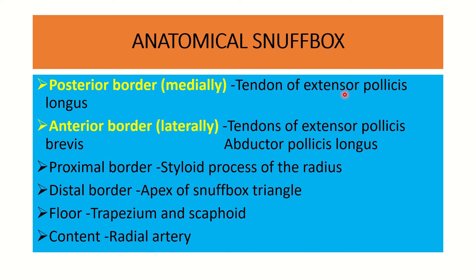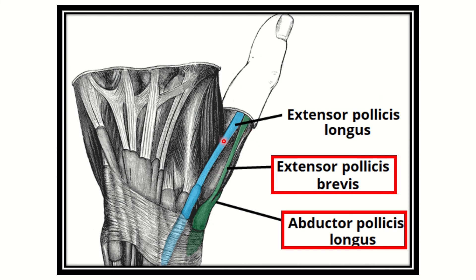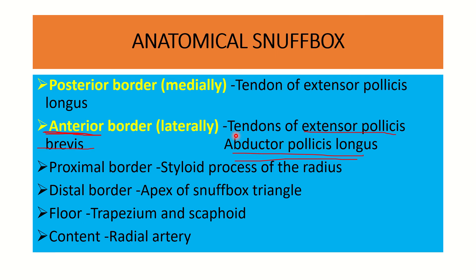So the posterior border, that is the posteromedial border, is bounded by the tendon of extensor pollicis longus. The anterior border, that is the anterolateral border, is bounded by extensor pollicis brevis and abductor pollicis longus. The proximal border is formed by the styloid process of the radius. The distal border forms the apex of the anatomical snuffbox triangle.